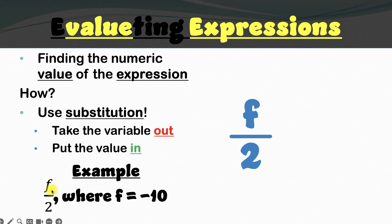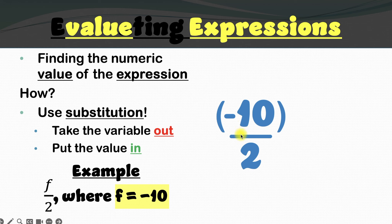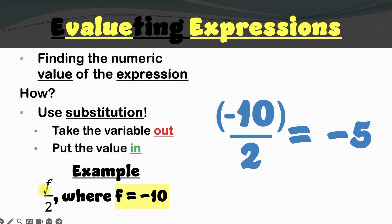In this example we've got f over 2, where f equals negative 10. Let's take our variable, put it in parentheses, and substitute. We'll take the f out, replace it with negative 10, and put it back. Remember that a fraction also represents division, so we've got negative 10 divided by positive 2, which gives us negative 5. When we evaluate f over 2 where f equals negative 10, the answer is negative 5.